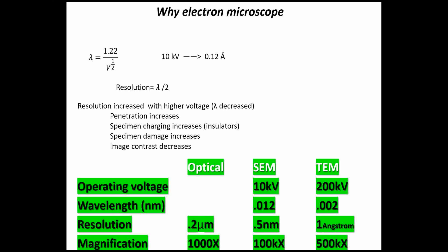We can compare optical, SEM, and TEM imaging. For optical, the resolution is 0.2 micron and magnification is 1000x. For SEM, depending on the accelerated voltage, we have a particular wavelength — resolution is 0.5 nanometer and magnification is 100k. In TEM, the operating voltage is higher, so wavelength is lower, giving resolution up to 1 angstrom and magnification of 500k. So SEM and TEM differ in operating voltage, wavelength, and resolution.